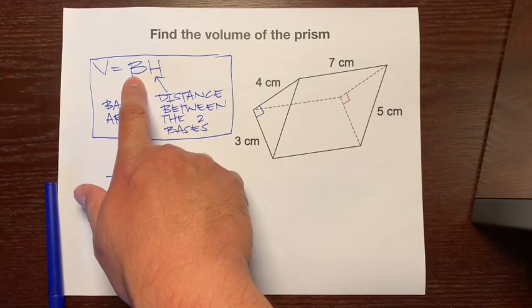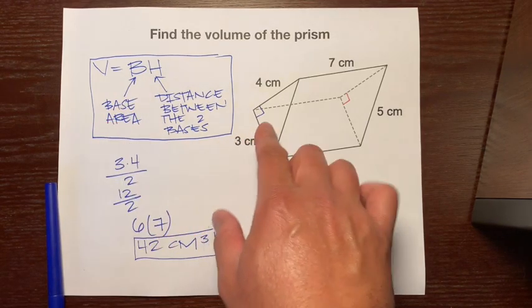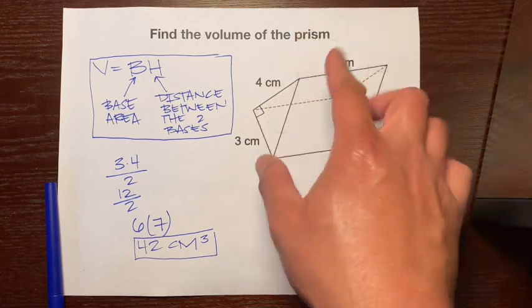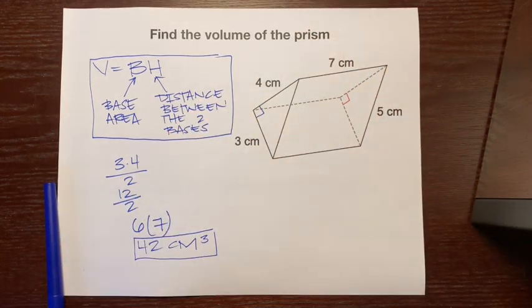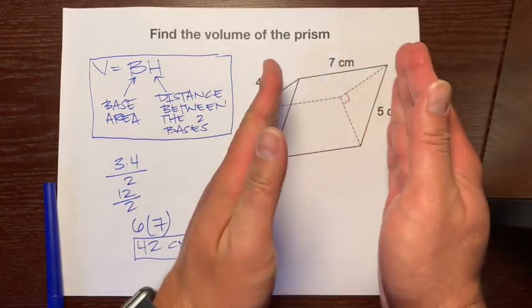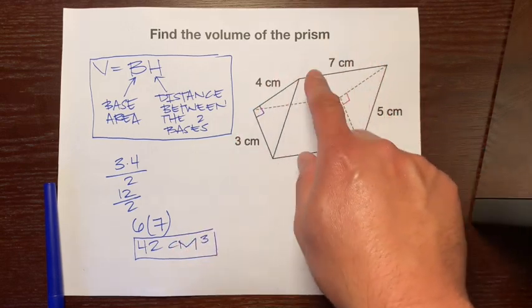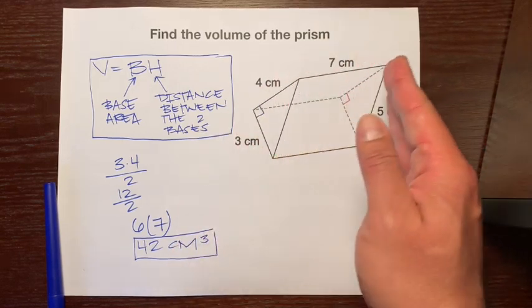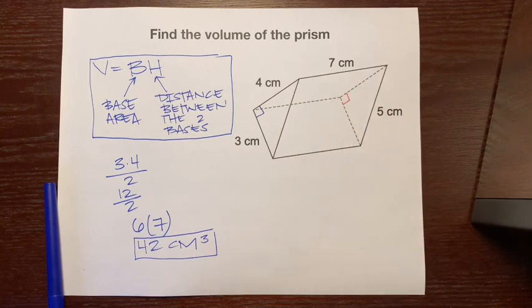That's how you find the volume of any prism. Just remember, it's the base area. Make sure you identify the correct base—the two that are congruent and parallel to each other. The distance between them tells us how many layers of cubes fit inside. I hope that helps, and great job.